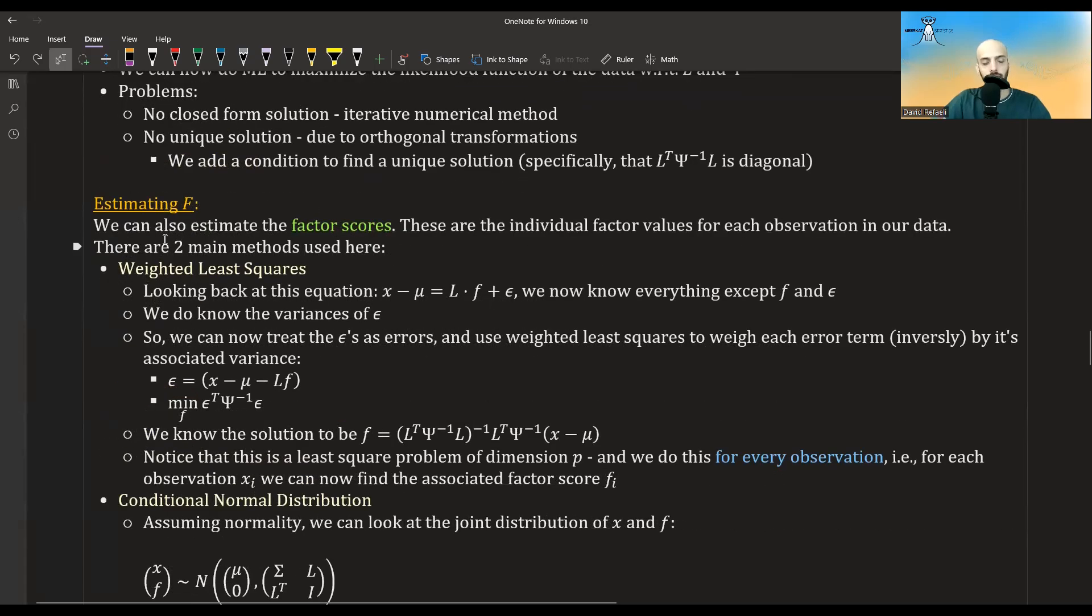Okay, so we estimated L and psi. What about F? We can also estimate F. And the values of F are called the factor scores. These are individual factor values. So for each observation in our data, we will have a different F. Okay, so for observation i, we will have xi and the associated fi. So we try now to estimate the latent unobserved variables, the latent factors, the common factors of each observation.